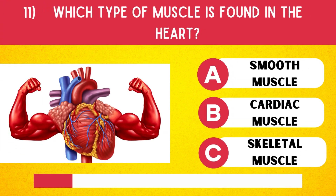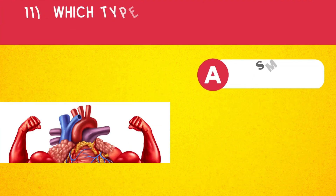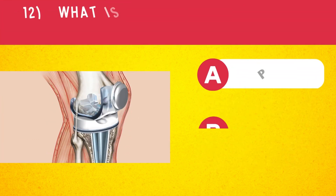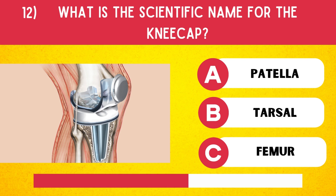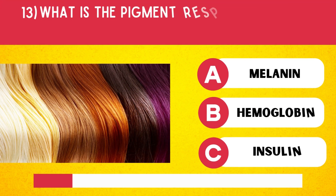Which type of muscle is found in the heart? Cardiac muscle. What is the scientific name for the kneecap? Patella.